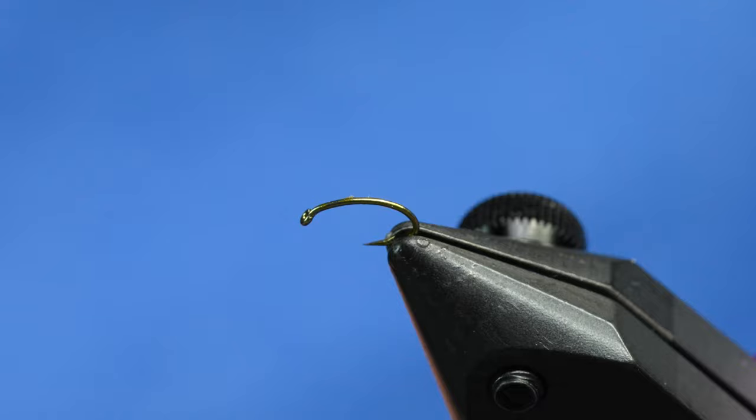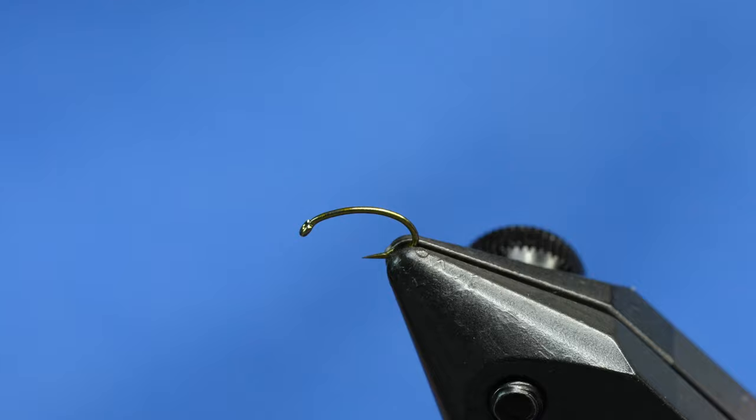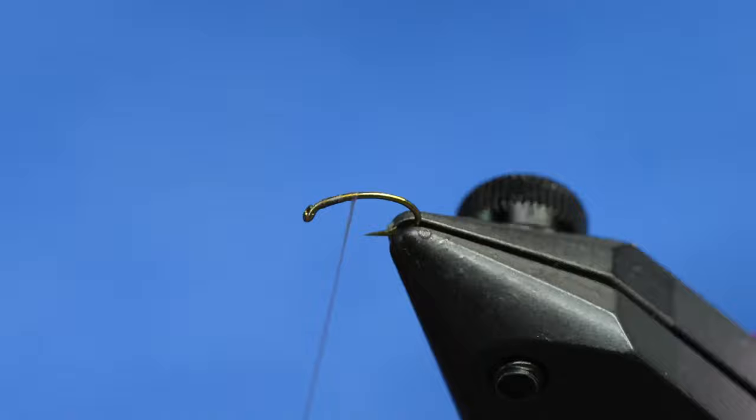This is just a curved shank hook, size 18. I believe it's a 2487 or 257, one of the two. I'm going to dress that with some 70 denier thread—in this case, it's Uni 8/0. I'm going to build up the thread a little bit here.